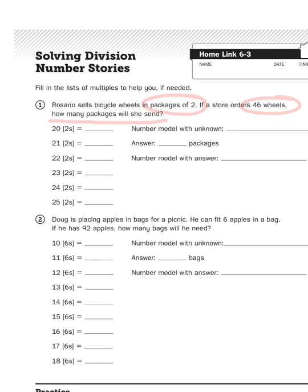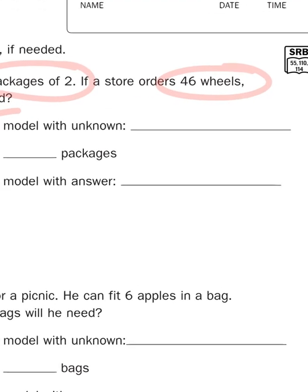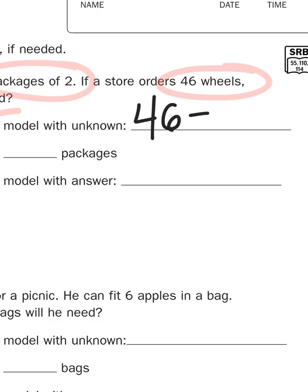So, if I have 46 wheels and I group them into twos, how many packages will that be? My number model with the unknown is 46 divided by 2 gives me P, P for packages.